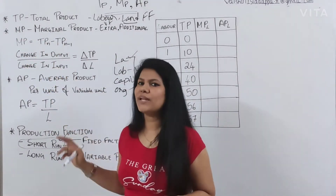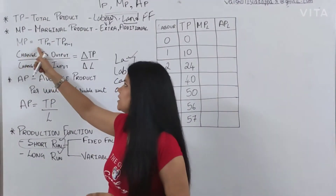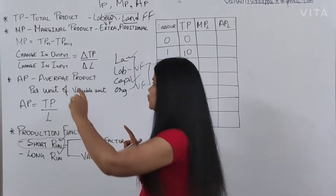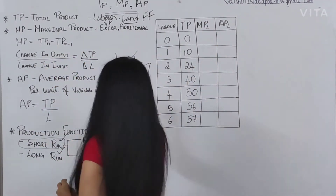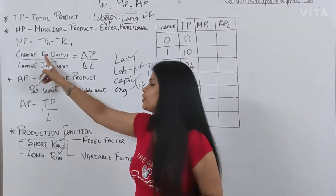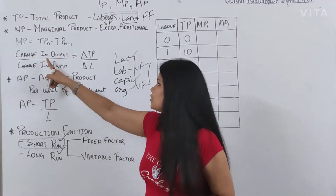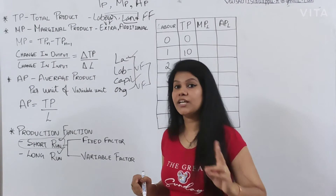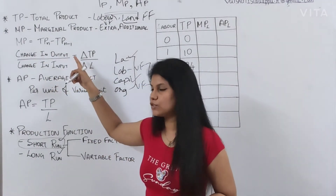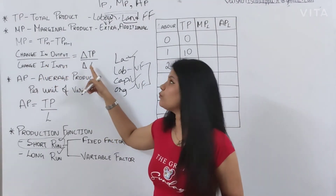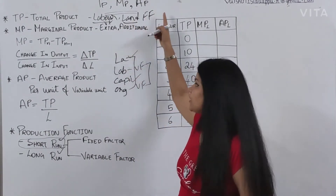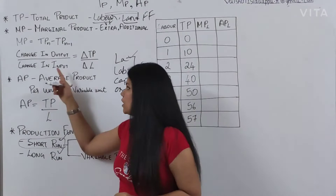What is the formula for marginal product? You can use two formulas. The easiest is: MP equals TPN minus TPN-1 (total product of current number minus total product of previous number). One more formula is: change in TP divided by change in input (delta TP divided by delta L). Since only labours are changing — land is a fixed factor and we are keeping it constant — we use labour as the input.